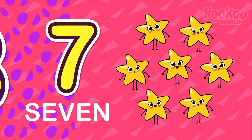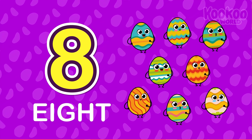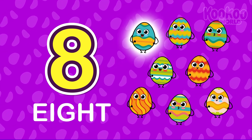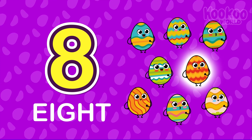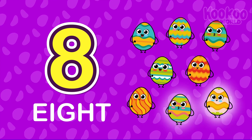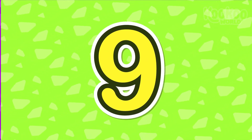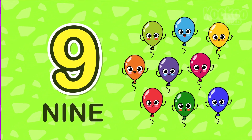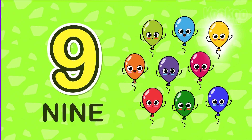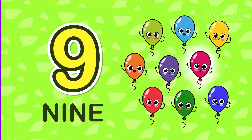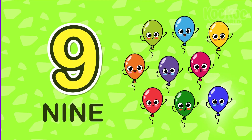On to the next one. Eight — eight chocolate eggs. Wonderful. One, two, three, four, five, six, seven, eight. Let's continue. Nine — nine balloons. One, two, three, four, five, six, seven, eight, nine. Perfect.